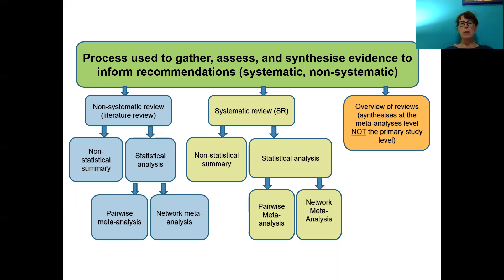Coming back to our systematic review definition: a review is considered systematic if all questions were formulated into PICO — Population, Intervention, Comparison, and Outcome format — inclusion criteria were specified for all study types such as trials or cohort studies, the reviewers searched two or more databases, and two people screened studies against inclusion criteria independently.